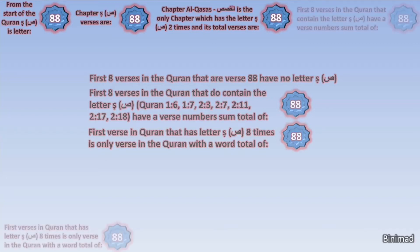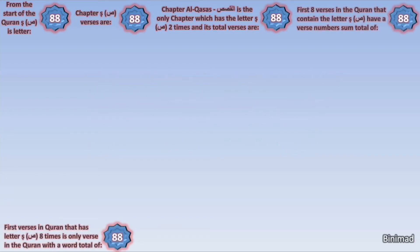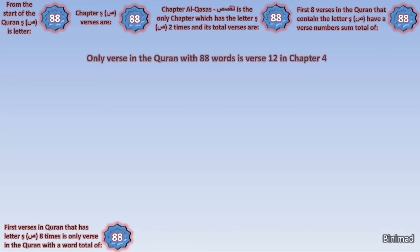This is truly remarkable but only the tip of the iceberg. This verse — the only verse with 88 words — came in chapter Al-Nisa, chapter 4, verse number 12. And the surprise here is that the number of verses in chapter Al-Nisa is 176, which is 88 plus 88.